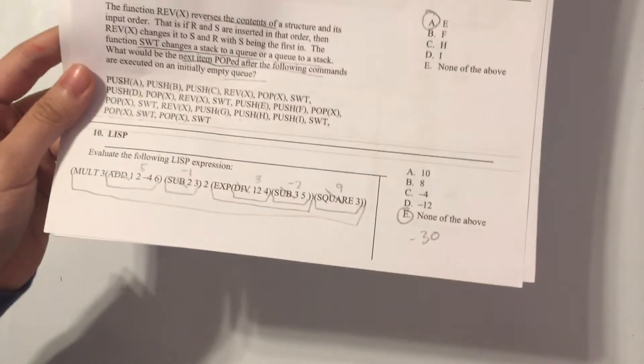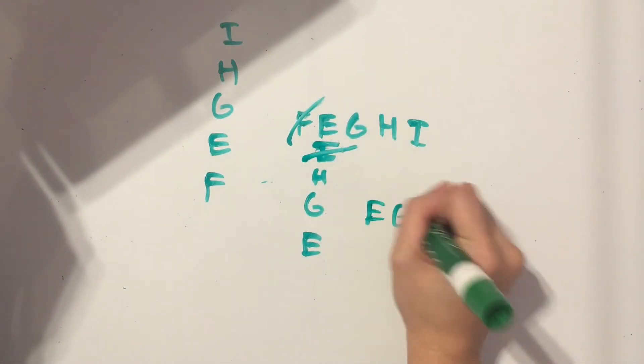And after that, we pop. Then we switch again, as it says here. So we have E, G, H.